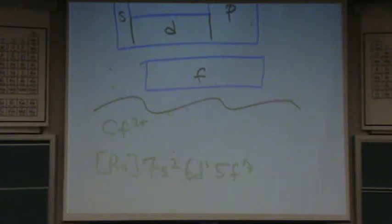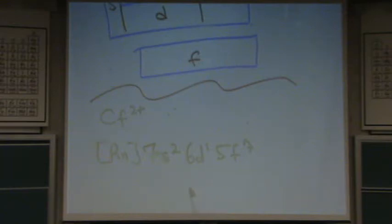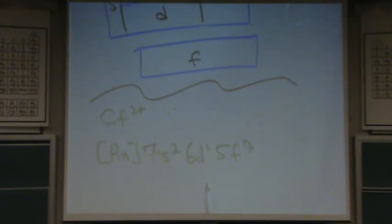In my class we don't do exceptions. In the D block and in the F block, there are probably cumulatively at least 20 to 30 exceptions to the rule. You need to find out if your instructor wants you to know all exceptions, because if they do, this would not be the correct answer — Californium has an exception. So make sure you ask your instructor whether they want you to know exceptions or not.